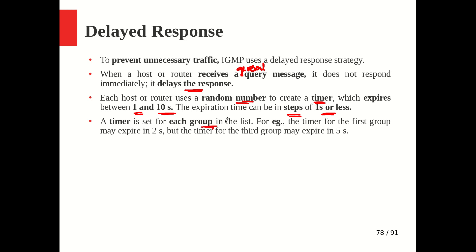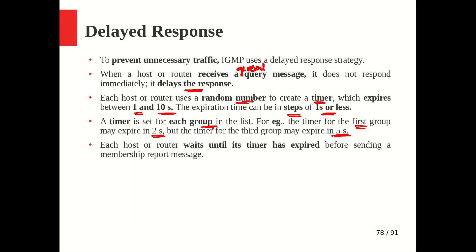A timer is set for each group in the list. For example, the timer for the first group could expire in 2 seconds, and for a third group in 5 seconds — any random value between 1 and 10 seconds. Across different hosts on the same group, some timers will expire faster. Whichever host's timer expires first will send the membership report message, which is then broadcast to all others.